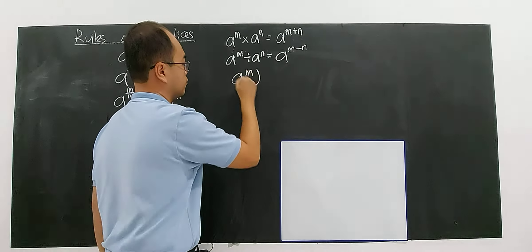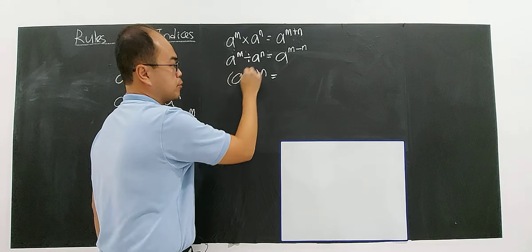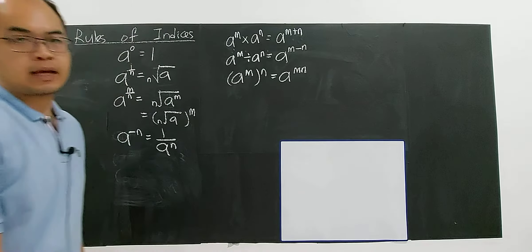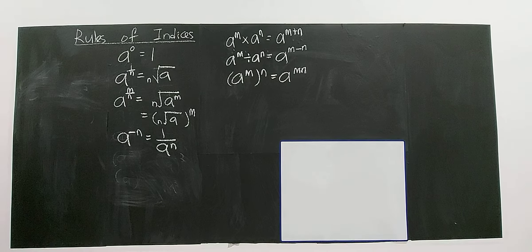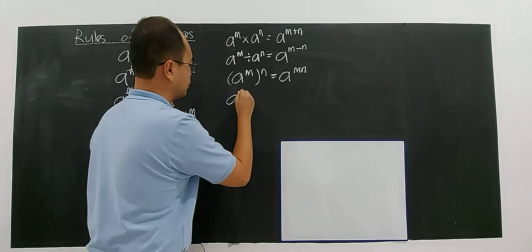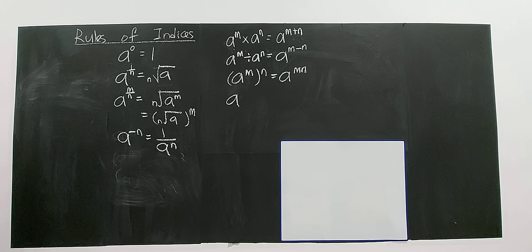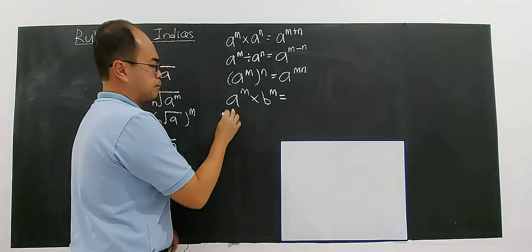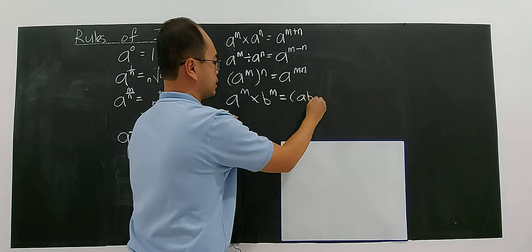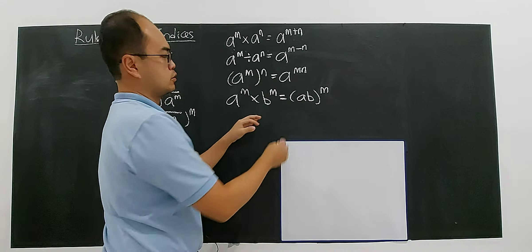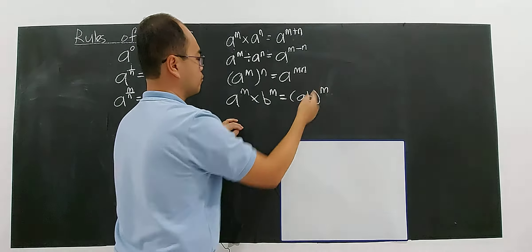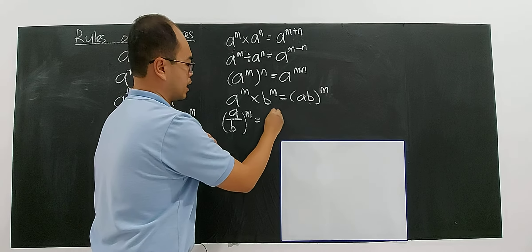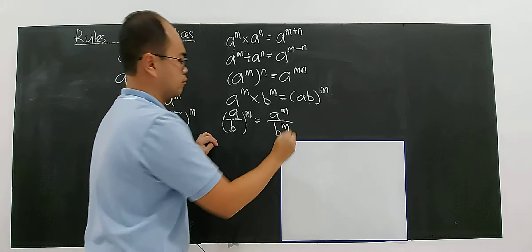Another rule: A to the power of M, then the whole thing to the power of N — you multiply the indices to get A to the power of M times N. Also, if you have A to the power of M times B to the power of M — different bases but same power — you can write it as AB to the power of M. Similarly, A over B to the power of M equals A to the power of M divided by B to the power of M.